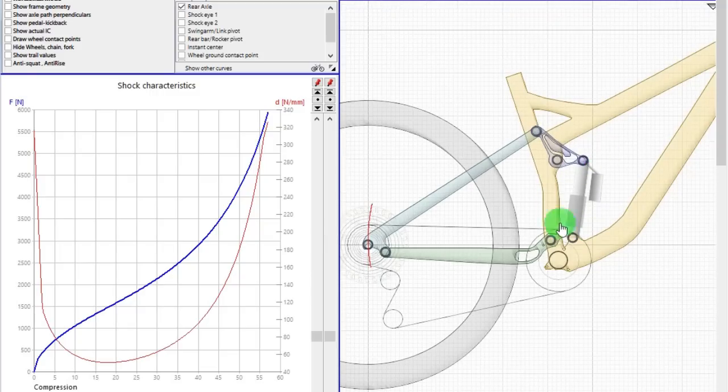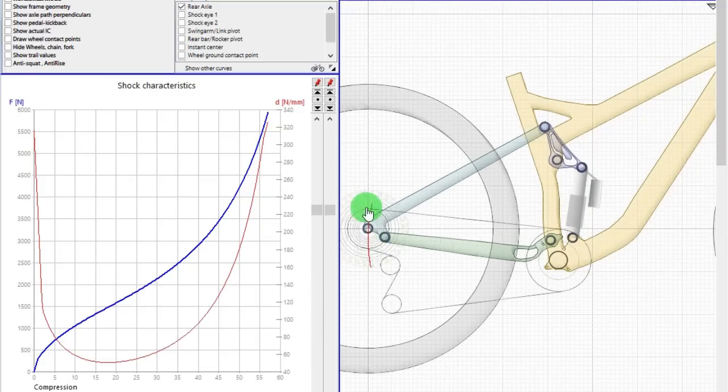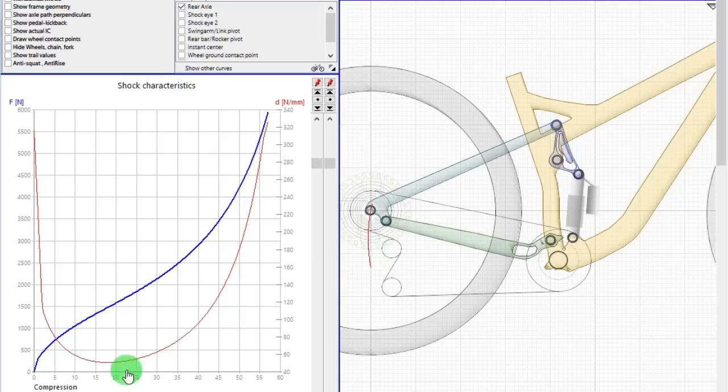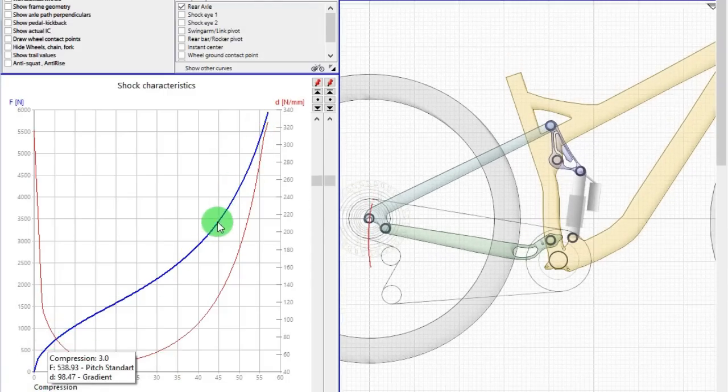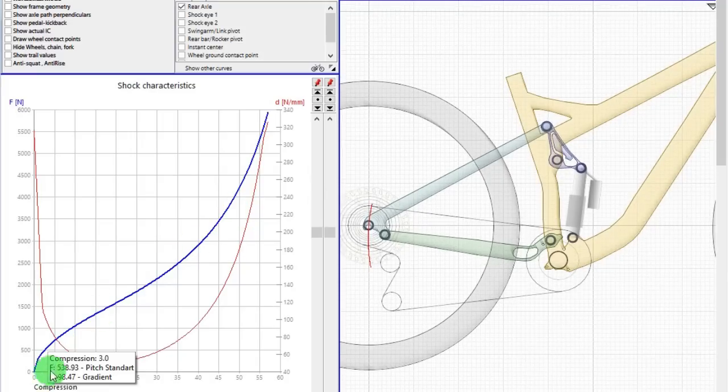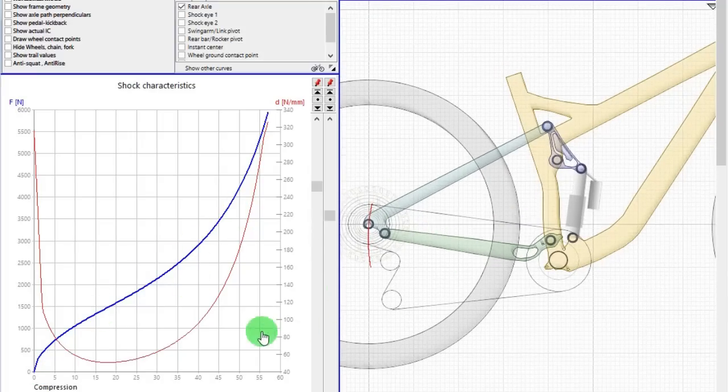I could have used an air shock to do these simulations, but as you can see here, this is the curve for an air shock. An air shock is a progressive shock, so it will be harder to analyze.